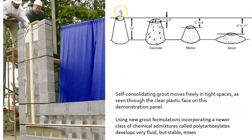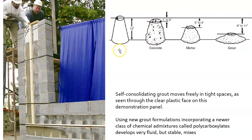Using a slump test cone — 12 inches tall — filled with the material then lifted: concrete would slump 1–6 inches, mortar would slump 5–8 inches, and grout would slump all the way down to 8–11 inches, essentially a puddle. This speaks to the water content of the material. Grout needs to be fluid to fill spaces; concrete is not used for the installation of masonry.